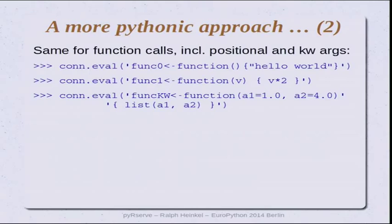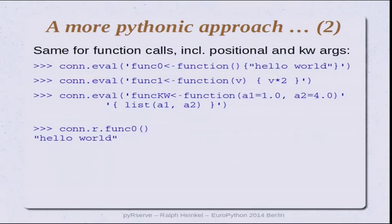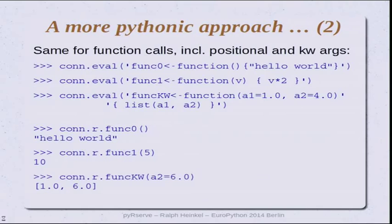To demonstrate how functions are called in this Pythonic way using the R namespace, I create three simple functions: the first takes no argument and returns a static string, the second takes one argument and doubles the value, and the last takes keyword arguments. You call them by using the R namespace — call function_zero to get the string, provide an argument to the second, and provide a keyword value to the last and get the list back. It's very easy to understand.